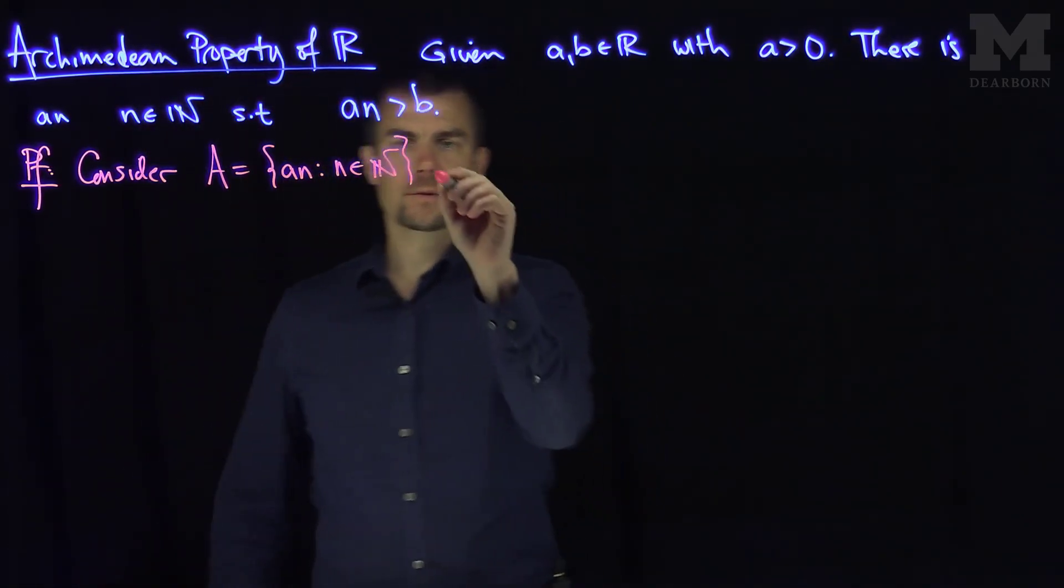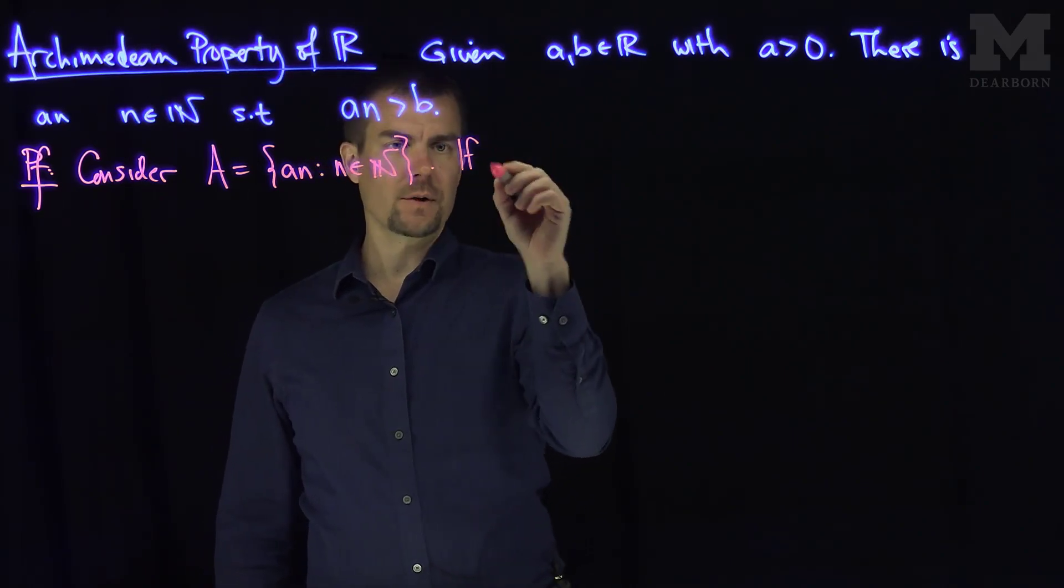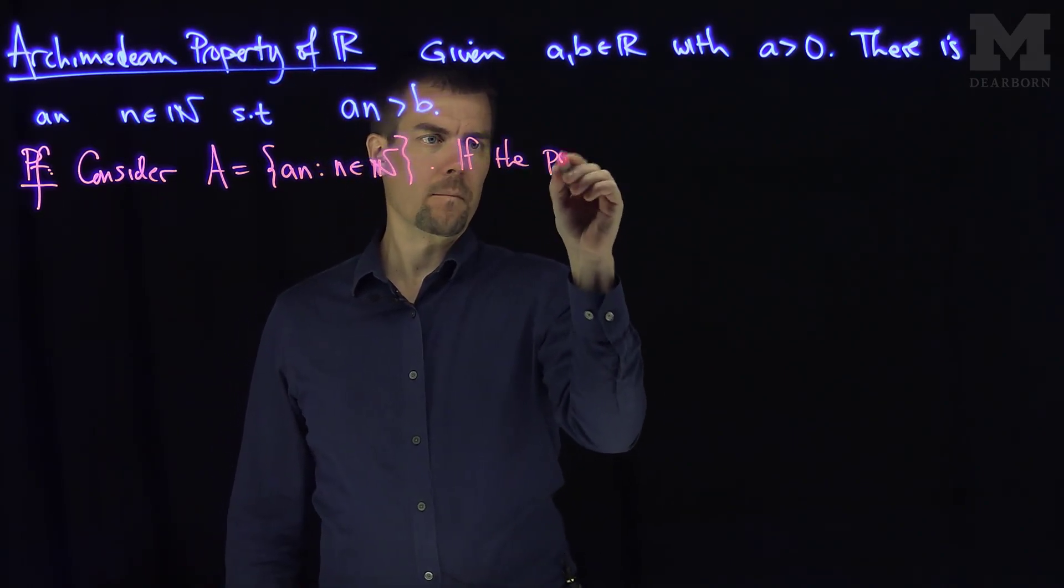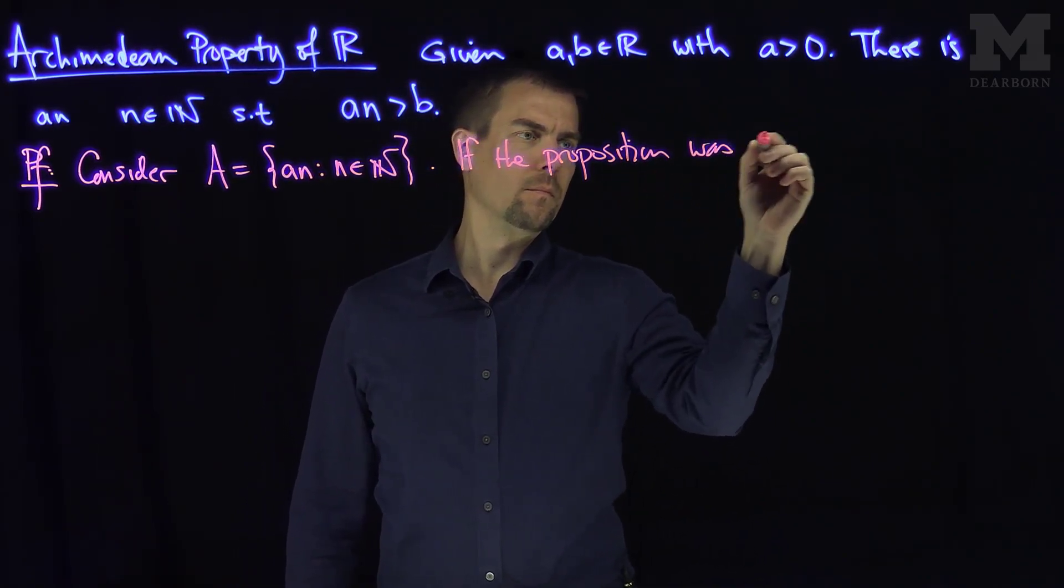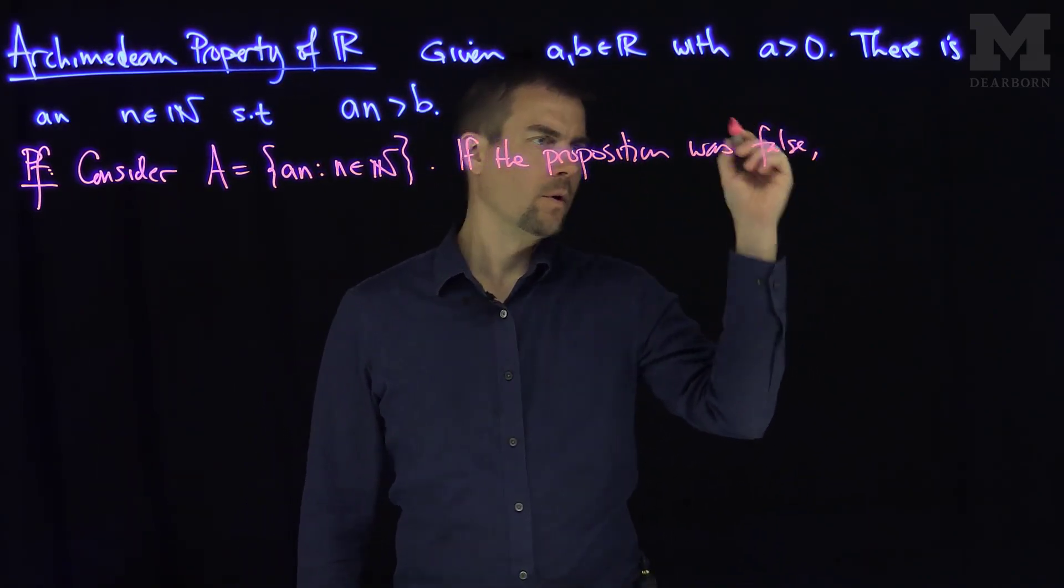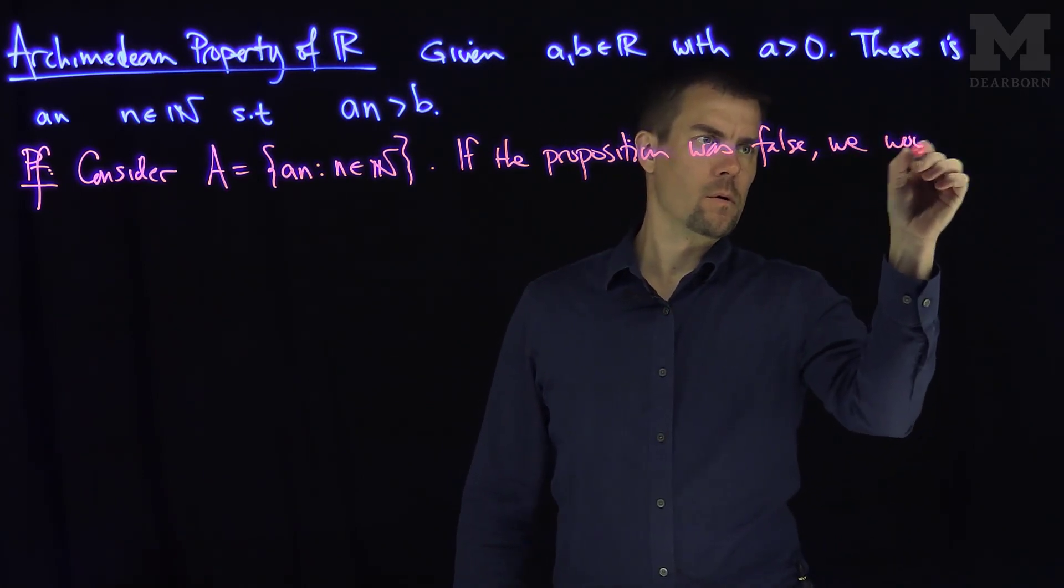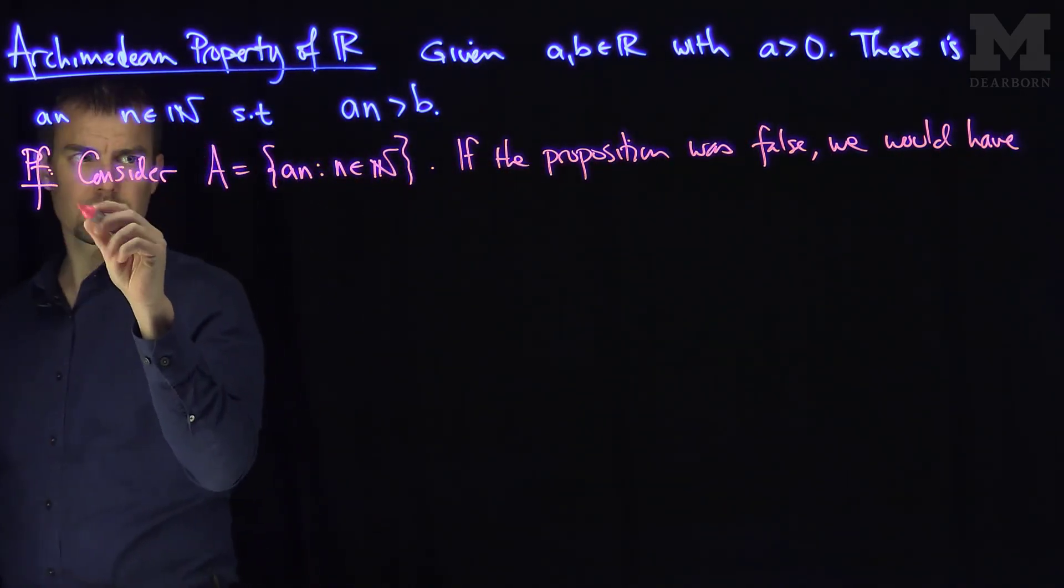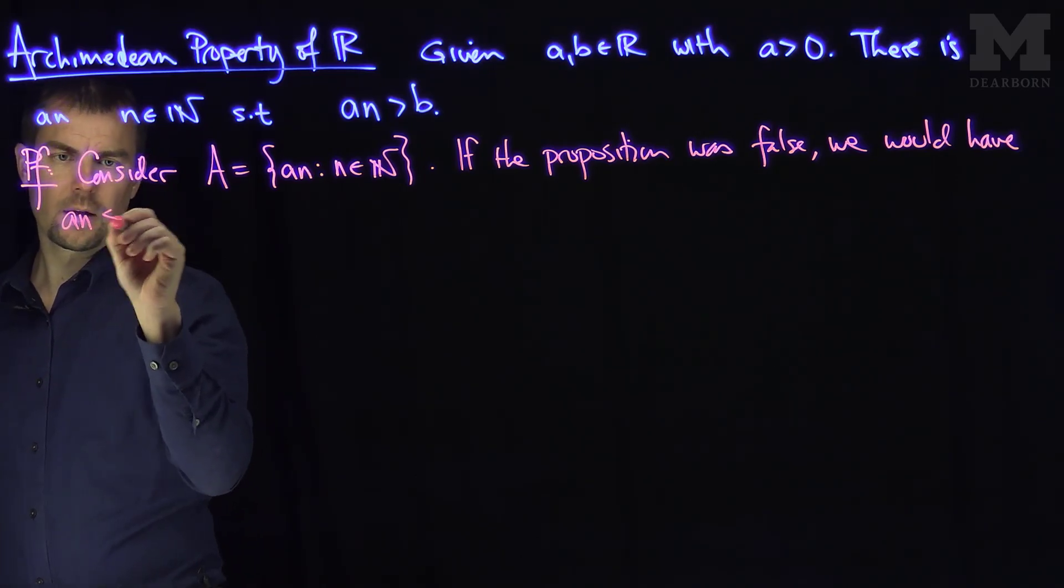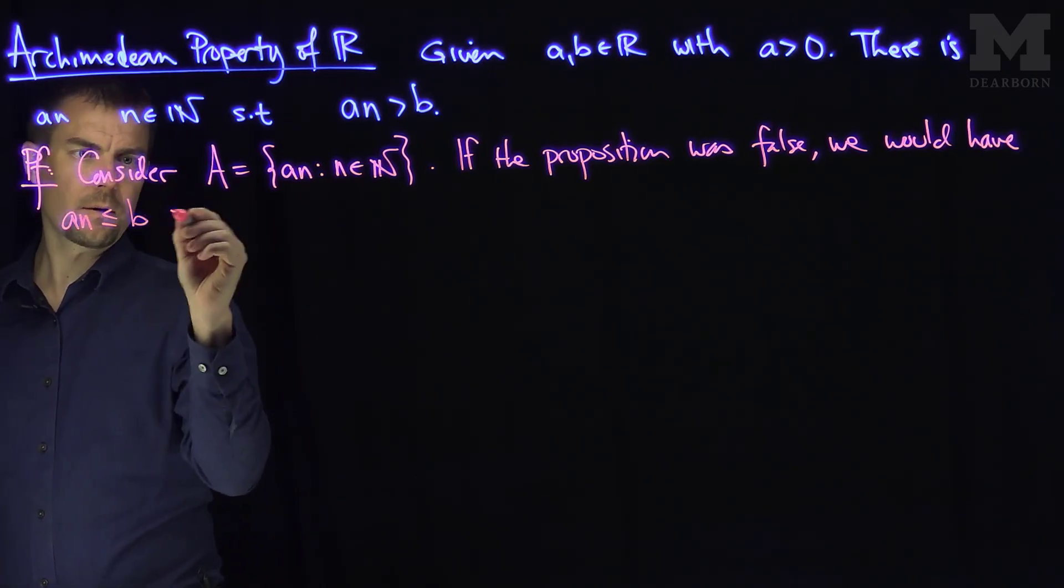If this was false, if the statement was false, we would have that a times n less than or equal to b for all n.